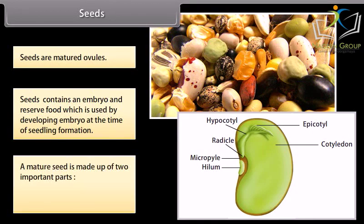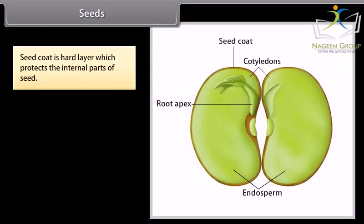A mature seed is made up of two important parts: seed coat and embryo. Seed coat is hard layer which protects the internal parts of seed.